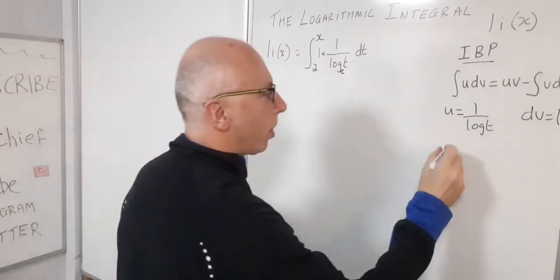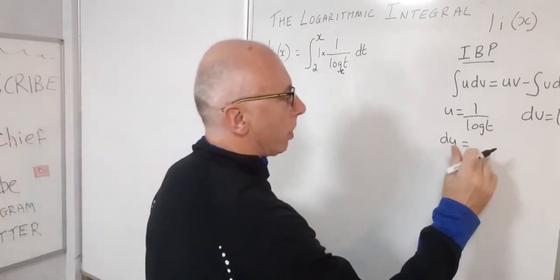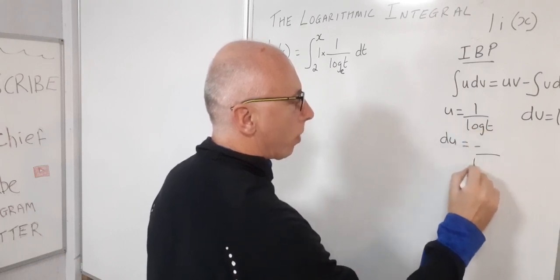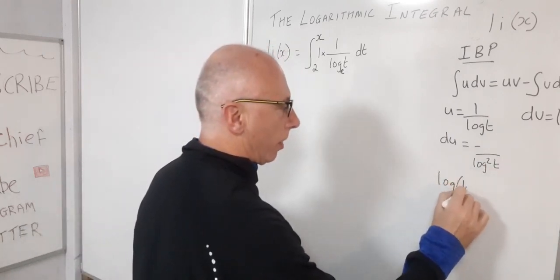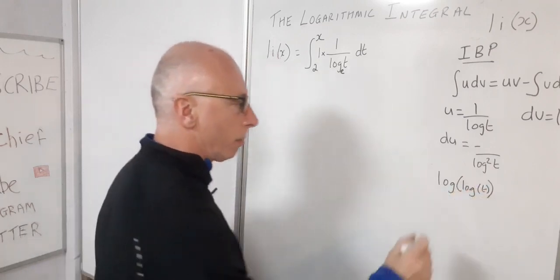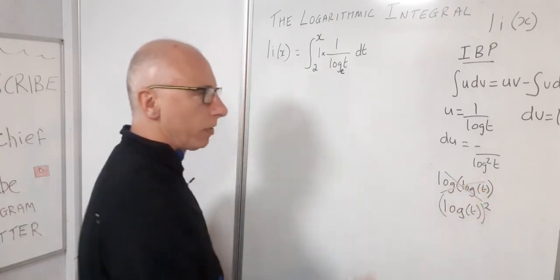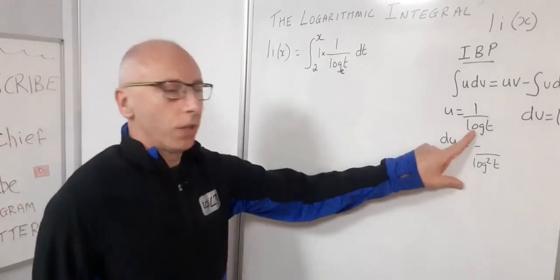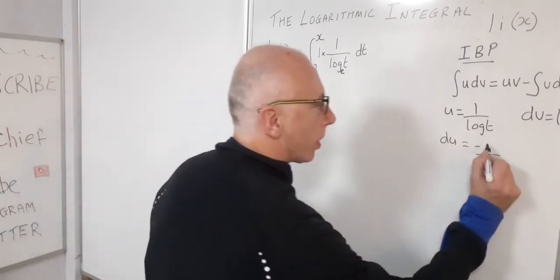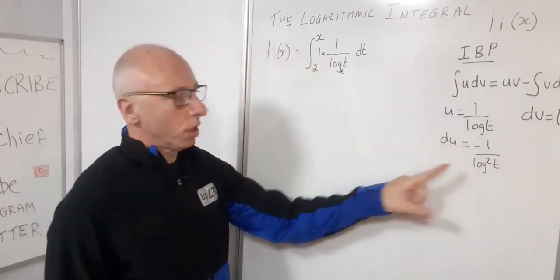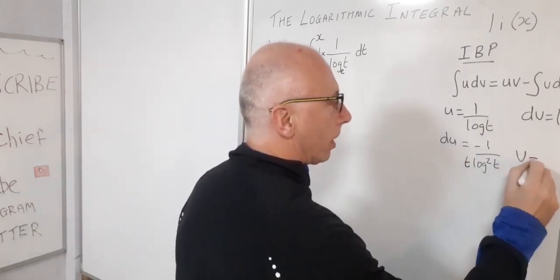Taking the derivative of 1/log(t): using the reciprocal rule, we get a negative sign with log(t) squared in the denominator, giving log²(t). Note that log²(t) means log(t) squared — not log of log(t), which is a common student mistake. Applying the chain rule, the derivative of log(t) is 1/t, so du equals −1/(t·log²(t)). Integrating dv = 1 dt gives v = t.